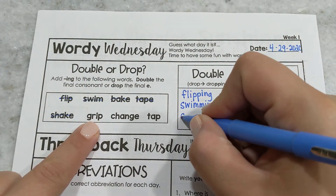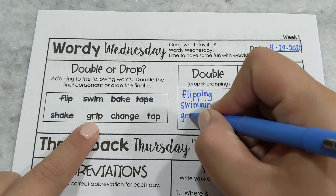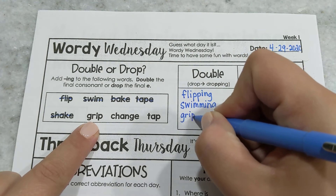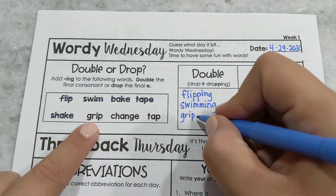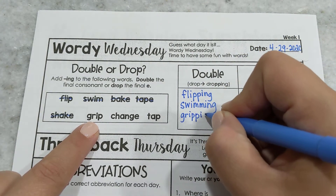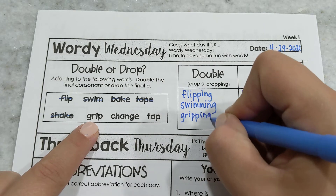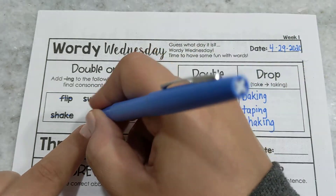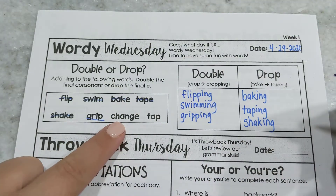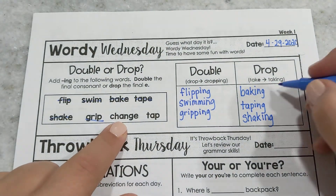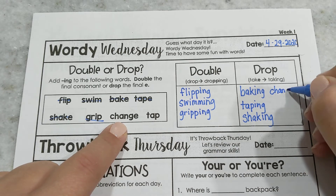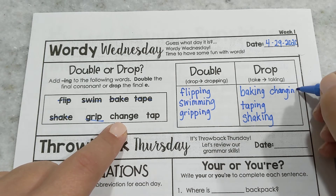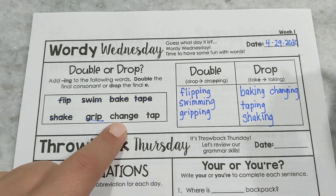Grip — I'm going to double that consonant. Otherwise that word would be 'griping.' So we have grip. Changing ends with an e, so of course we're going to have to drop that e to add our -ing ending.